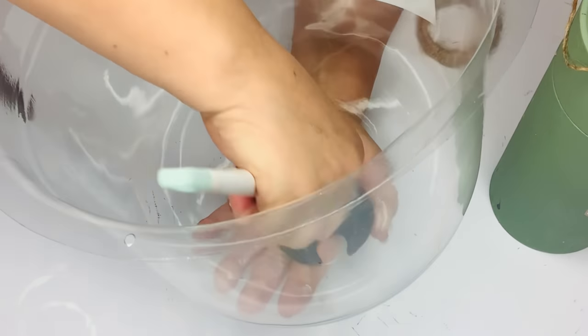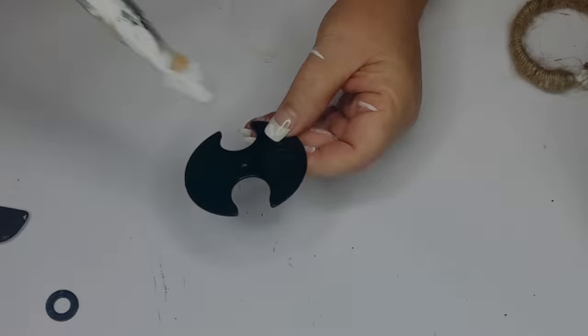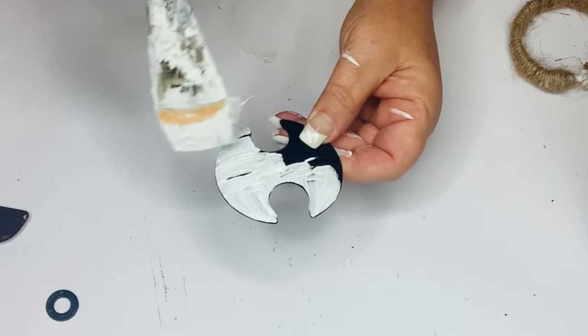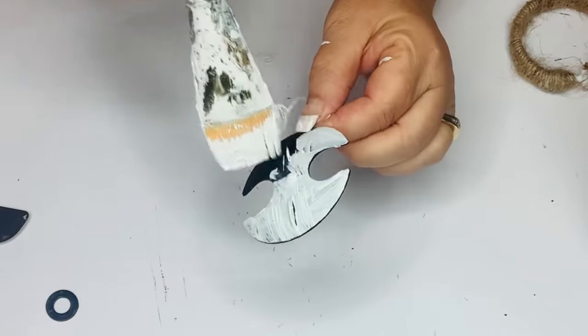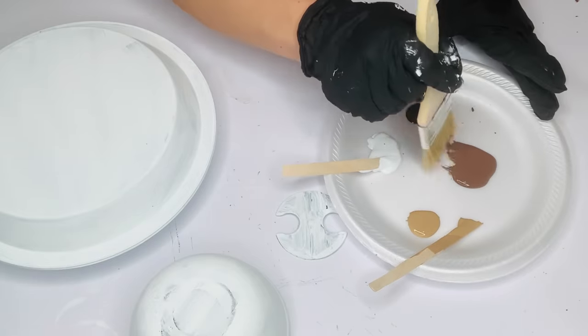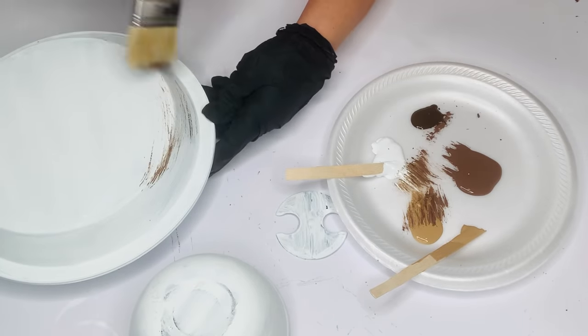At the top of my cloche, there's this little vent that you can open and close to give your plants air. I didn't want that to stay black, so I'm painting it white as well. I just pulled off the washer using my Cricut spatula and it came apart pretty easily.